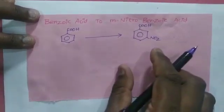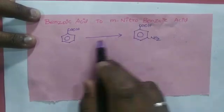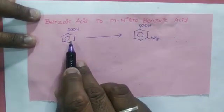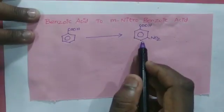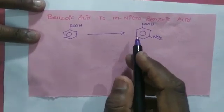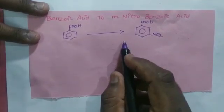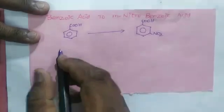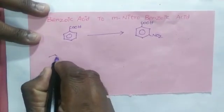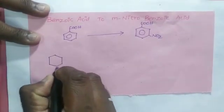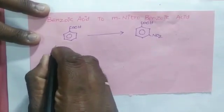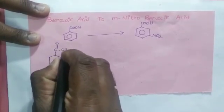To convert benzoic acid into meta-nitrobenzoic acid, you have to write the reactants as well as the product very carefully and very legibly. Here, benzoic acid has a C double bond O, O-H group.